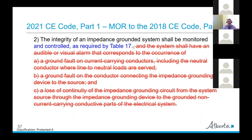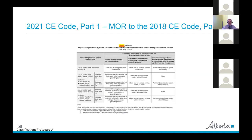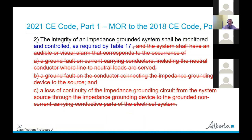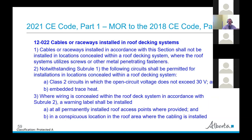In Section 10, on impedance grounded systems, they've introduced Table 17. The monitoring requirements that used to be spelled out in the rule have now been moved into Table 17, so the rule was changed accordingly to just reference Table 17.